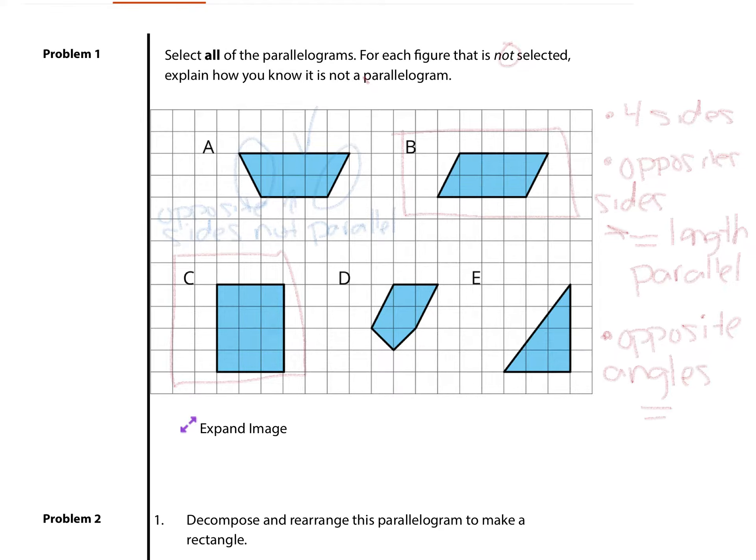In D, why isn't D a parallelogram? Well, I'm counting one, two, three, four, five sides. So that's an obvious reason. In E, one, two, three sides, that can't possibly be a parallelogram. It's a right triangle. Let's continue on.